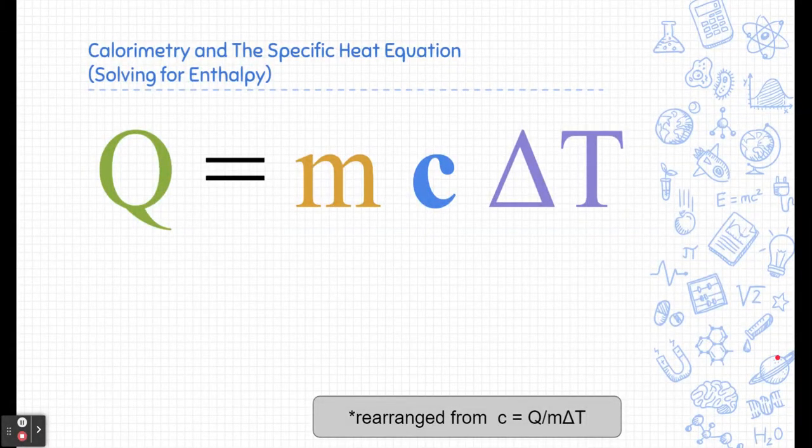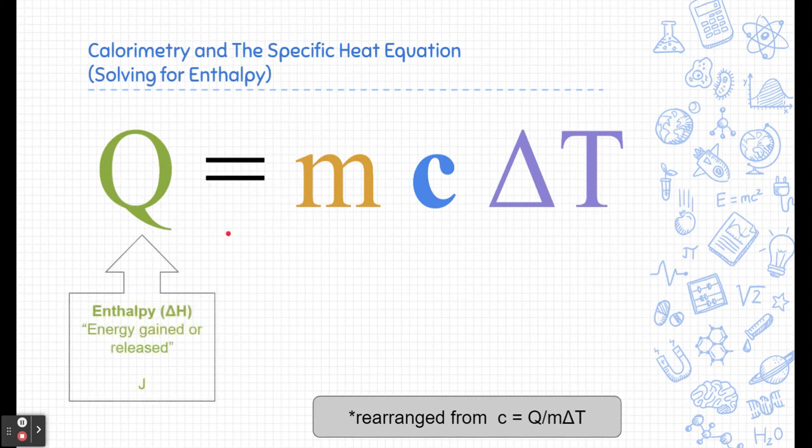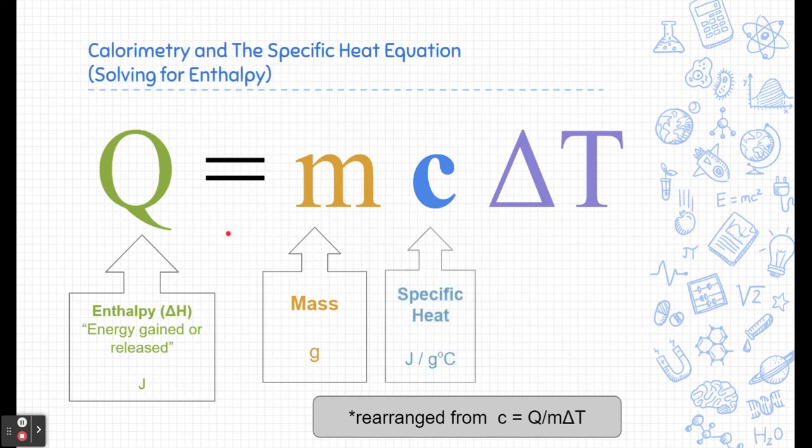So when we deal with calorimeters, we're going to be using the specific heat equation. Here's that specific heat equation rearranged to solve for Q, which is enthalpy. Q is the amount of energy gained or released by water or the reaction, and that's measured in joules. M is mass measured in grams, C is the specific heat, and delta T is the change in temperature.